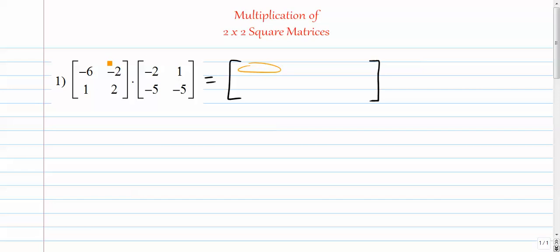To get that entry, I'm going to circle the first row of the first matrix and the first column of the second matrix. I'm going to multiply negative 6 times negative 2 and add that to the product of negative 2 and negative 5.